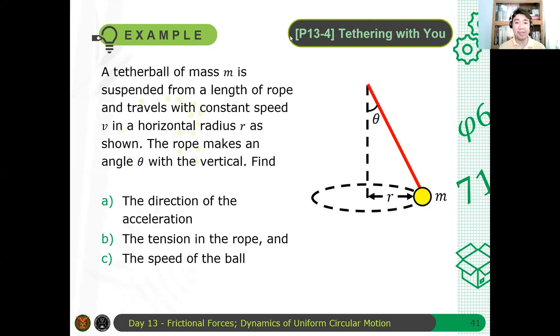But now we have another example here, tethering with you. A tether ball of mass m is suspended from a length of rope and travels with constant speed v in horizontal radius r as shown. The rope makes an angle theta with the vertical. Find a) the direction of the acceleration, b) the tension in the rope, and c) the speed of the ball.